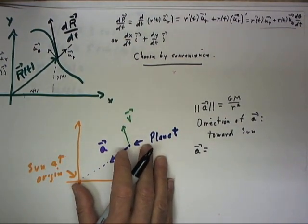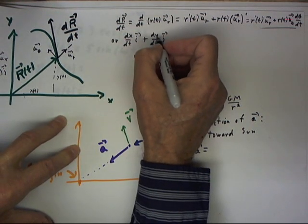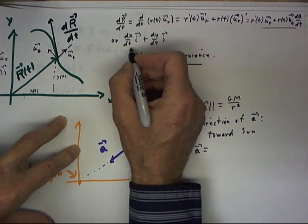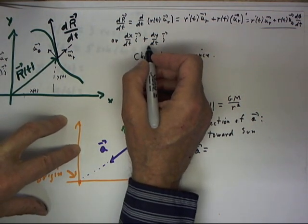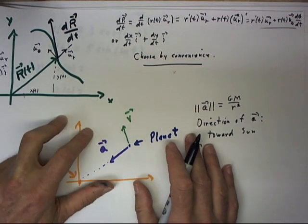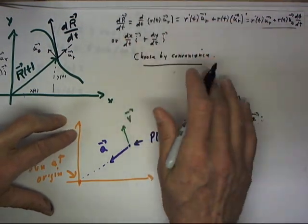Now, you might think that the xi plus yj notation being more familiar and apparently simpler is the one we would always use, but that's not going to be the case. We'll see an example here where it's much more convenient to use the polar form.